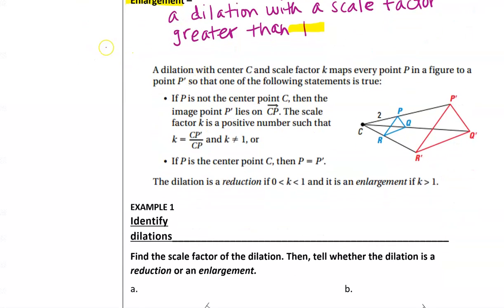If we look at this center portion here. So a dilation with center C and scale factor K will map every point P in a figure to a point P prime, so that one of the following statements is true. If P is not the center point C, then the image of P prime lies on CP. So let me actually back that up and look at the diagram. What I want you to look at over here is this is considered my center. I also want you to notice that you have triangle P, Q, R right here. So there are no primes. This is your pre-image. And then you have an image. Obviously it grew, so it's an enlargement. You have P prime, Q prime, and R prime.